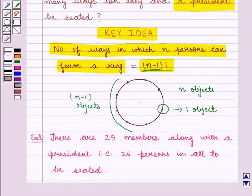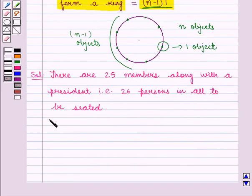As given in the key idea, we know that if we have n number of objects, then we can fix the position of 1 object and the remaining (n-1) objects can be placed in (n-1) factorial number of ways.